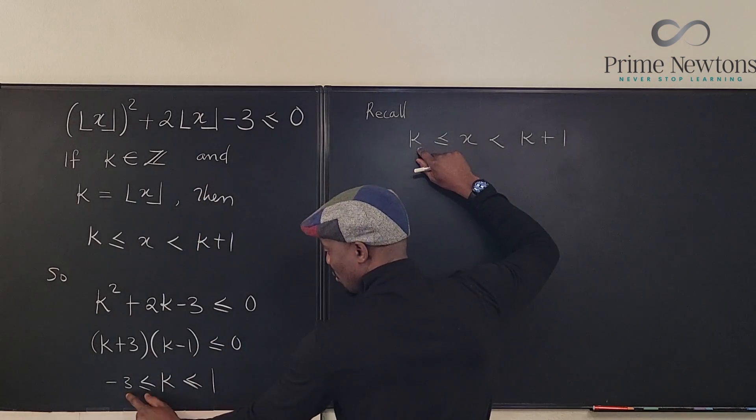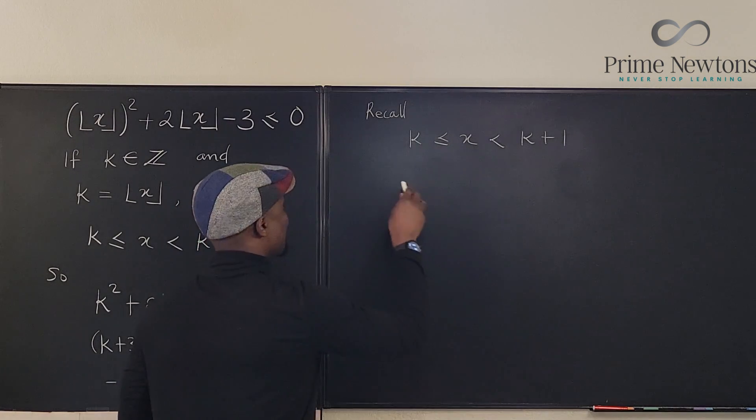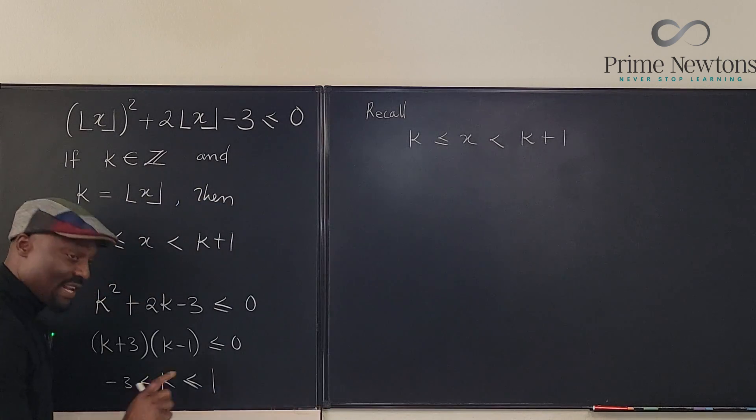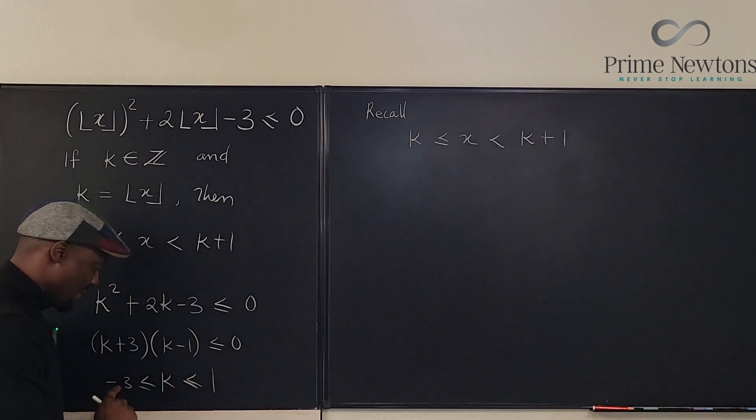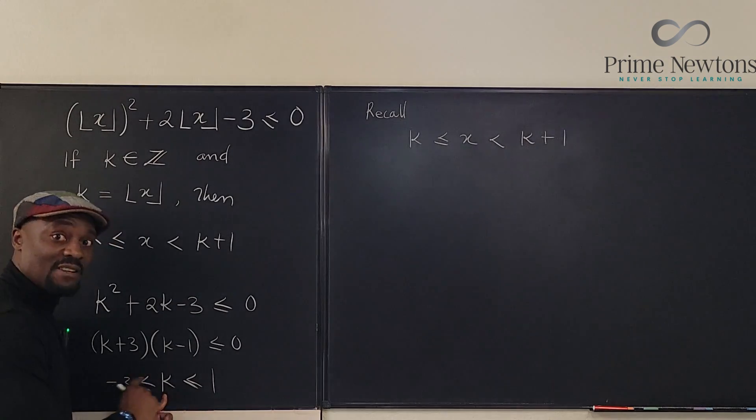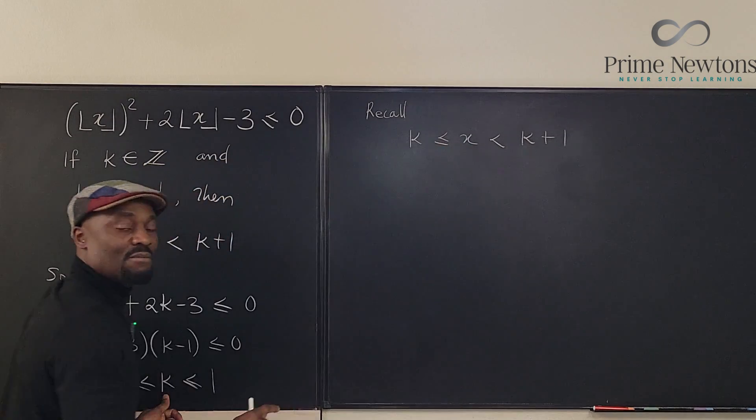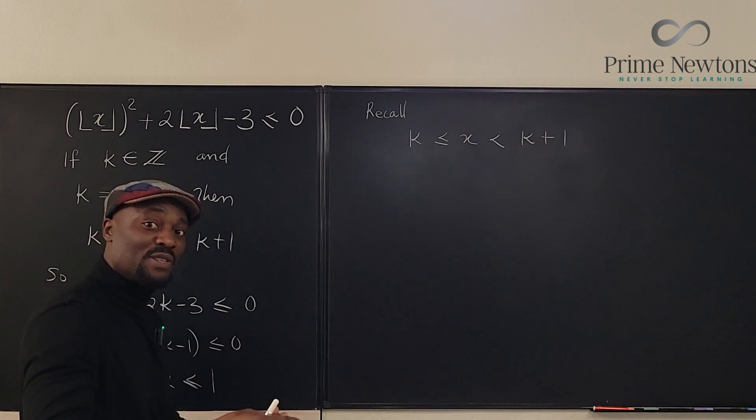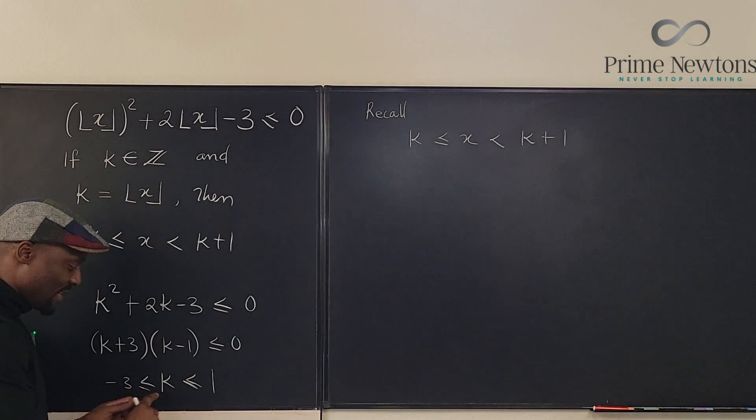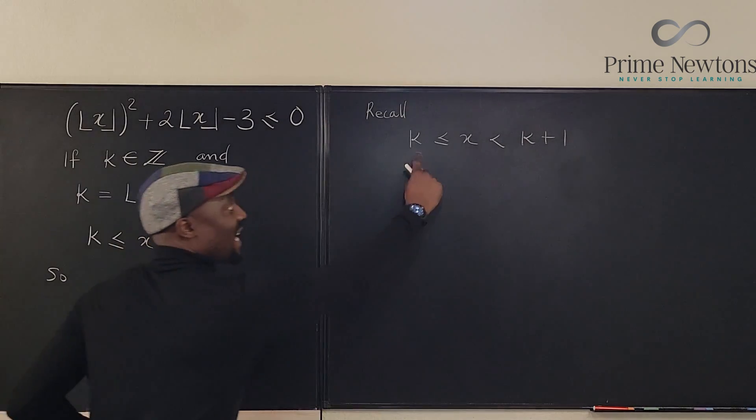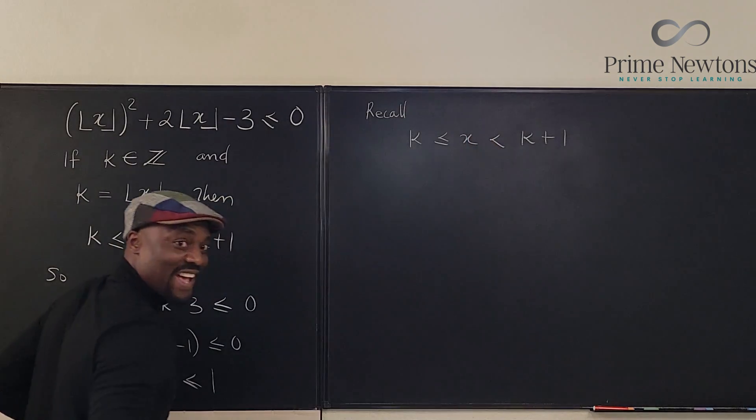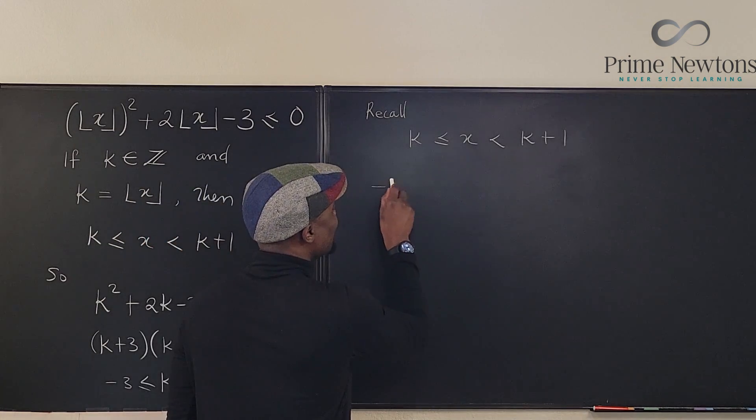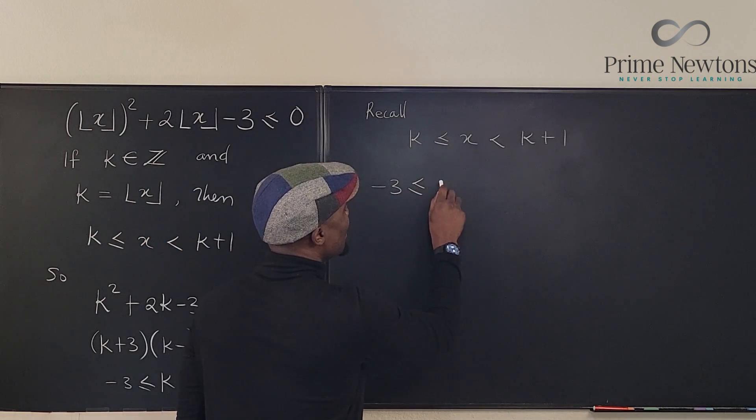And no matter what it is, it is less than or equal to X. So if negative 3 is less than K, then negative 3 is less than X, because K is less than X. Or if we're going with equal to, if negative 3 is equal to K, then K is equal to X, then negative 3 is equal to X. So whatever you do, you can say that negative 3 is less than or equal to X.